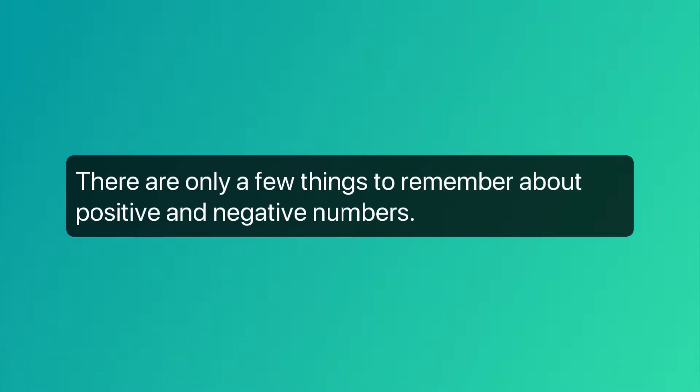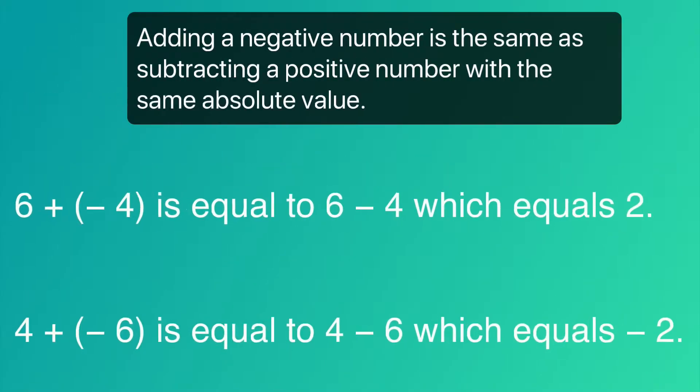There are only a few things to remember about positive and negative numbers. Adding a negative number is the same as subtracting a positive number with the same absolute value. As you can see below, 6 plus negative 4 is equal to 6 minus 4, which equals 2.